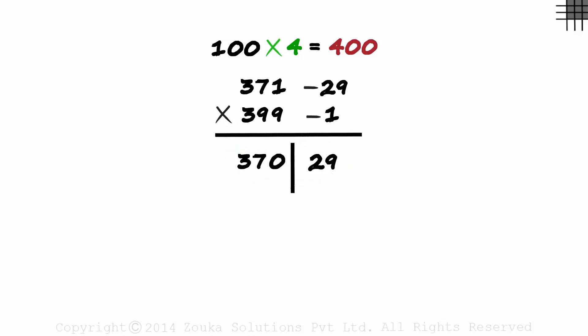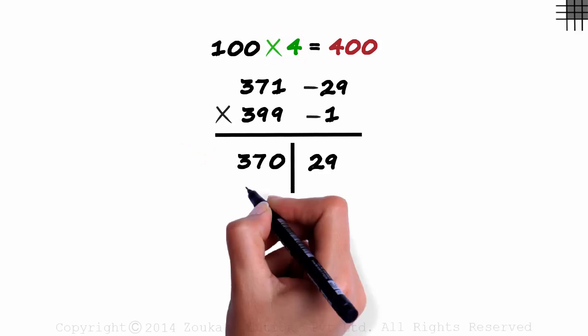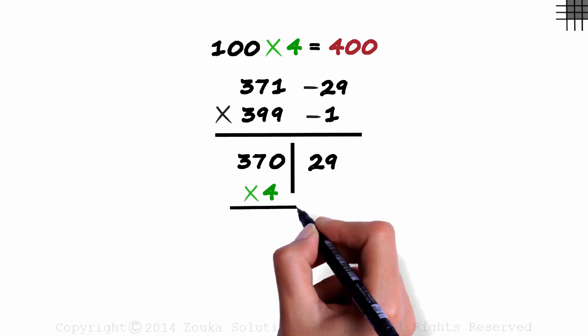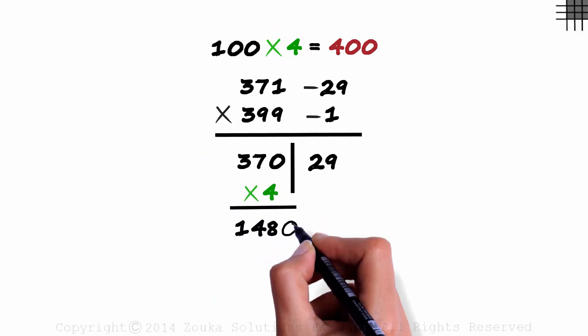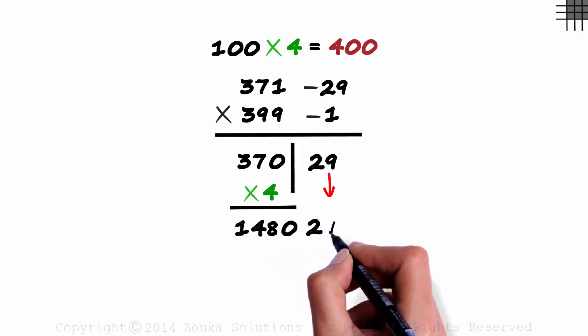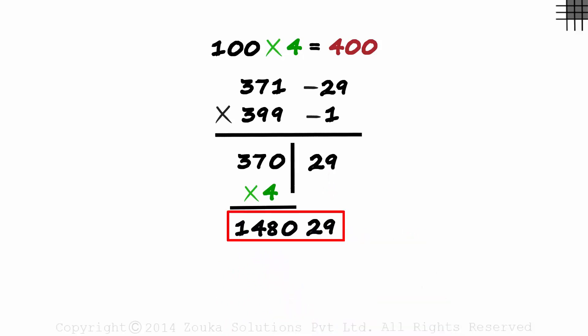Don't forget to multiply the number on the left hand side with 4. We multiply 370 with 4 and that equals 1480. And we get 29 down. That's the correct answer.